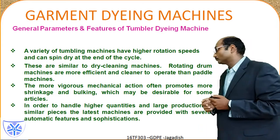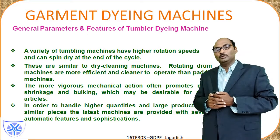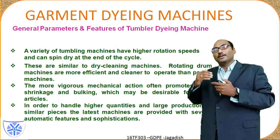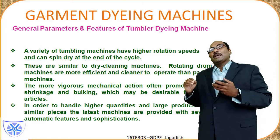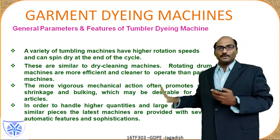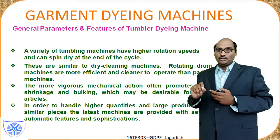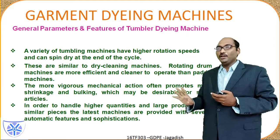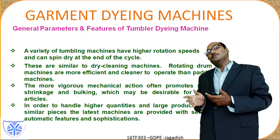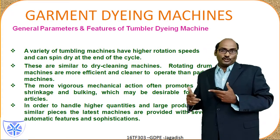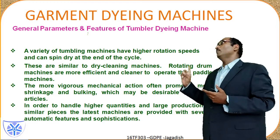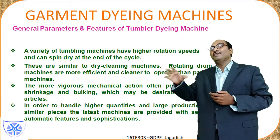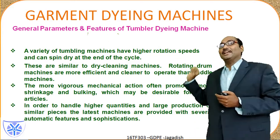To summarize the comparison: if garments are very small and repeated shades are used — as in sock manufacturing units — paddle machines are the best. In case of shirts, trousers, or any garments where shades are frequently changing, the rotary drum type machines are much more suitable. Both types have their own advantages and disadvantages in the two major categories.